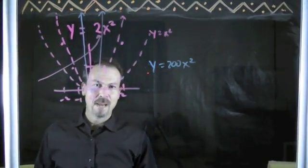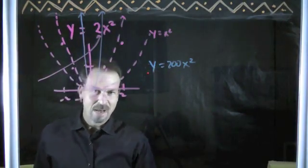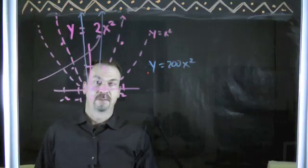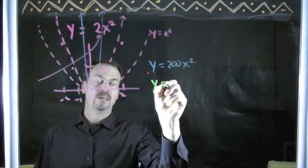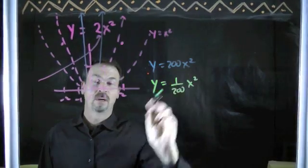Instead of being steep, can I make the graph actually broader? And it takes a little bit of thinking, but after a moment's thought, and sadly I'm about to give away the answer, which is always kind of unfortunate. You might, instead of doing a number that's big, like 200, do a number that's small and close to 0, like 1 over 200 x squared.